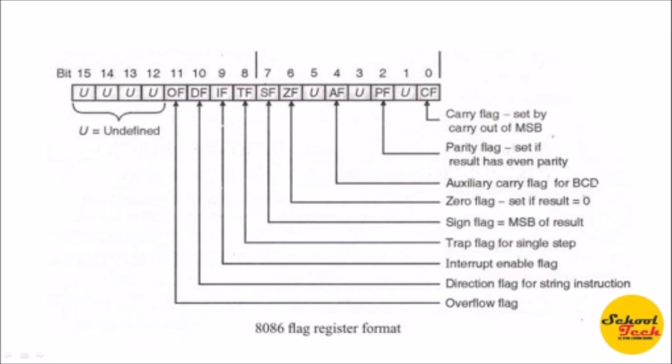The Parity Flag (PF) uses the concept of odd parity in the 8086 processor, such that the total number of ones including the parity flag is always odd — it is normally used for error detection. The six flags CF, ZF, AF, SF, OF, and PF are called status flags.